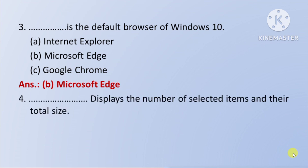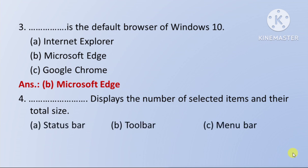Next question: displays the number of selected items and their total size — number of selected items ko display karta hai aur unke total size ko. Option A: Status bar. Option B: Toolbar. Option C: Menu bar. The right answer is option A: Status bar.